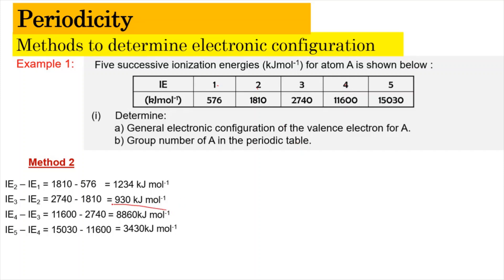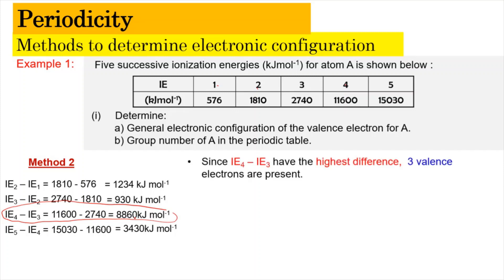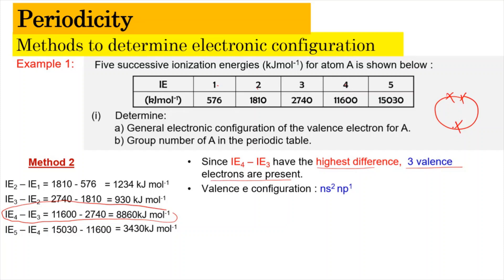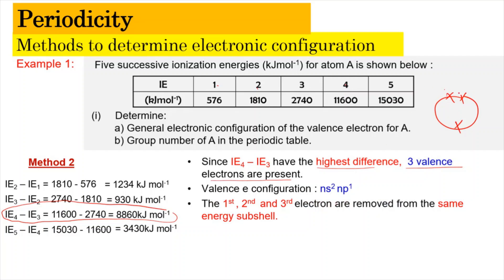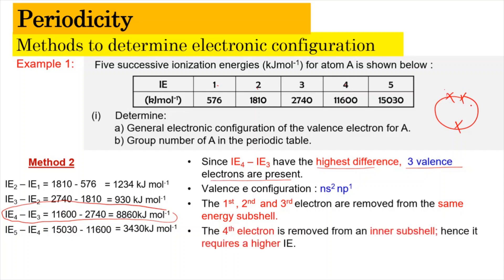Since IE4 minus IE3 has the highest difference, we conclude there are 3 valence electrons. The valence electronic configuration is Ns2 2p1. The first, second, and third electrons are removed from the outermost subshell, while the fourth electron is removed from the inner subshell requiring higher ionization energy. Therefore, atom A is in Group 13.